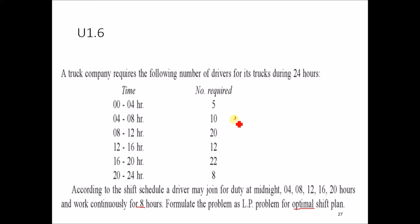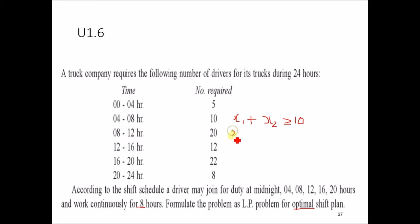We create constraints for each time period. For the 4 to 8 time slot, drivers starting at shift x1 and x2 both cover it, so: x1 plus x2 greater than or equal to 10. For the 8 to 12 slot, x2 plus x3 greater than or equal to 20, since the problem is a minimization problem.